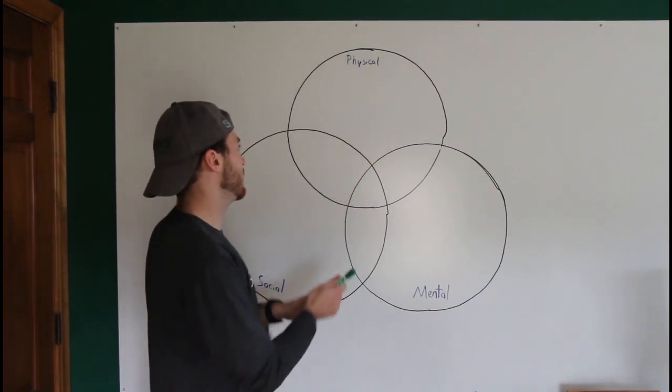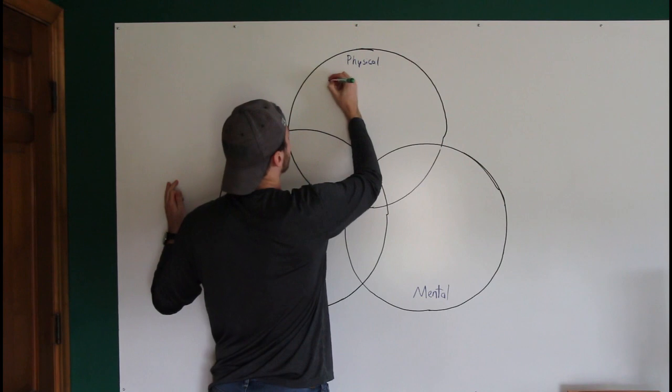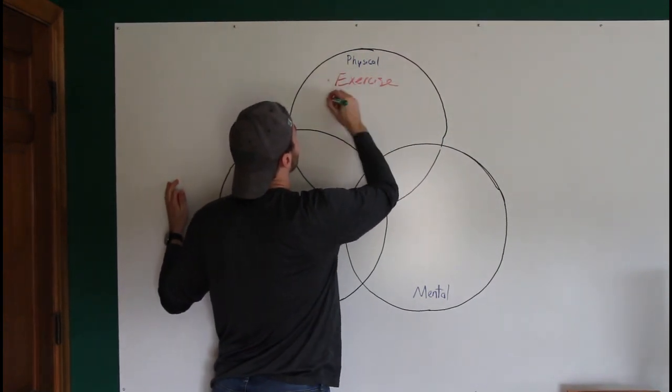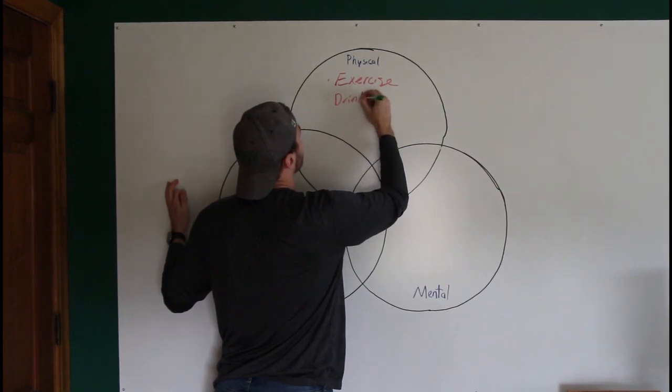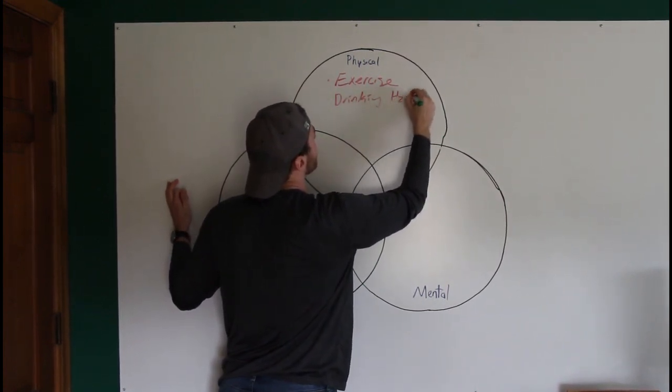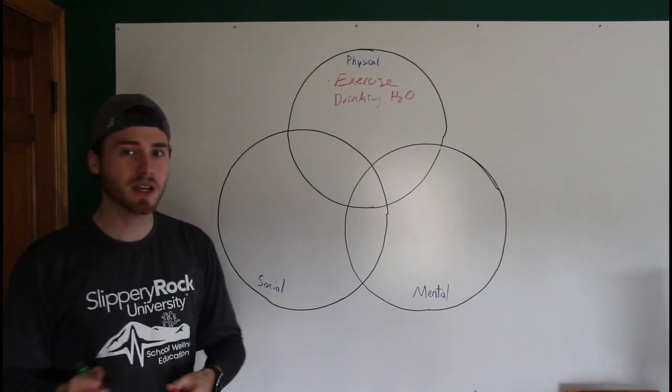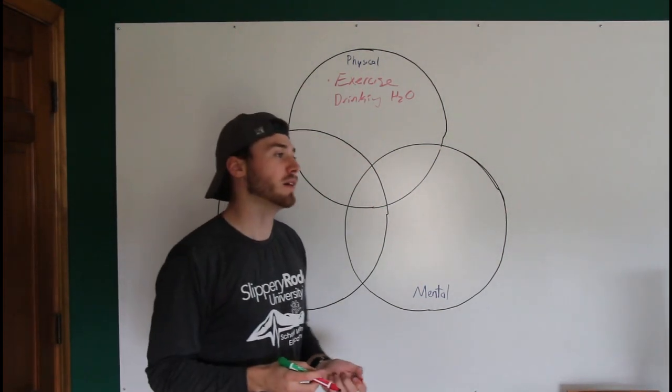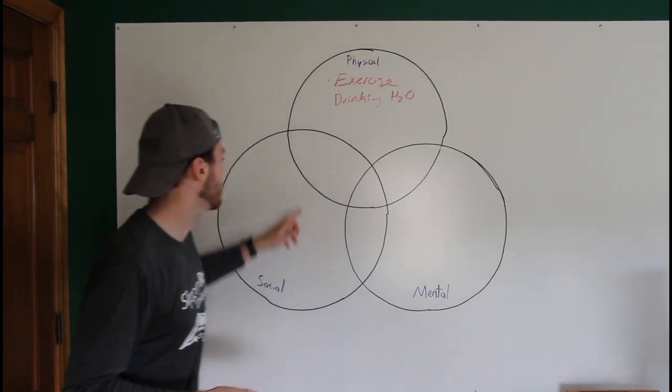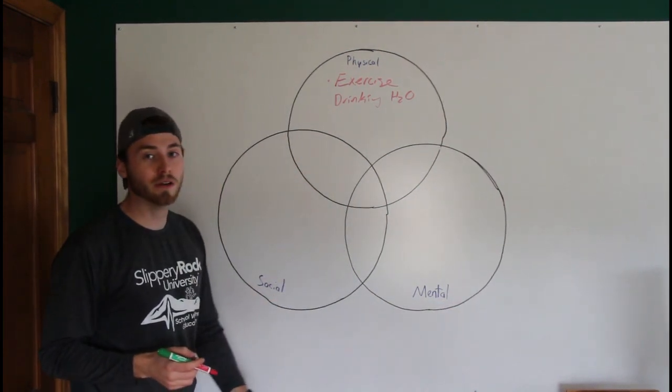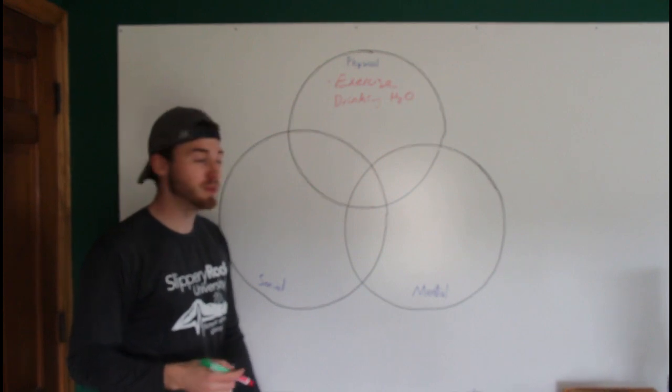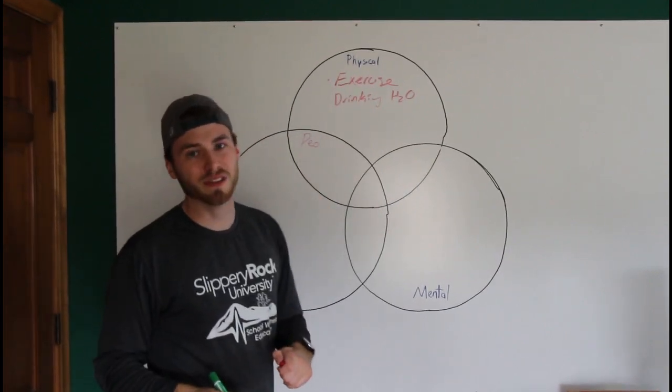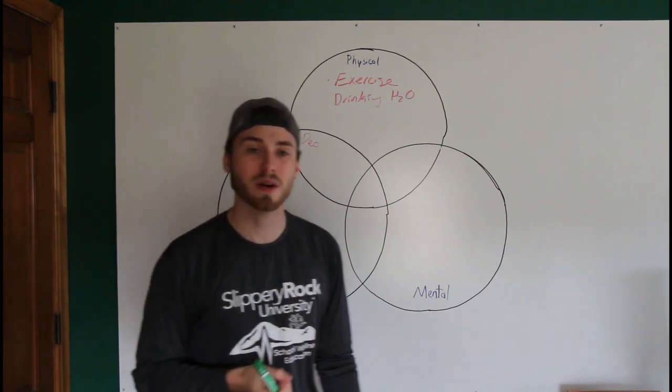So let's look at physical well-being. So physical well-being might be exercise or drinking water. But do you think that it could also be, I don't know, earlier I talked about wearing deodorant. Do you think putting on deodorant is going to help you make more friends and better relationships? Yeah. Because nobody really wants to be friends with a stinky friend, let's be honest. I was a stinky friend for a little while.